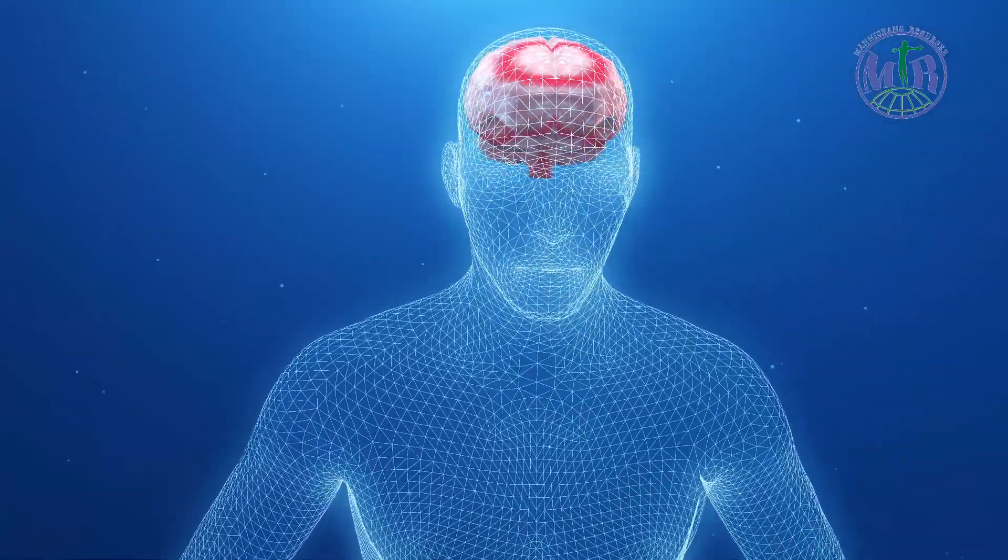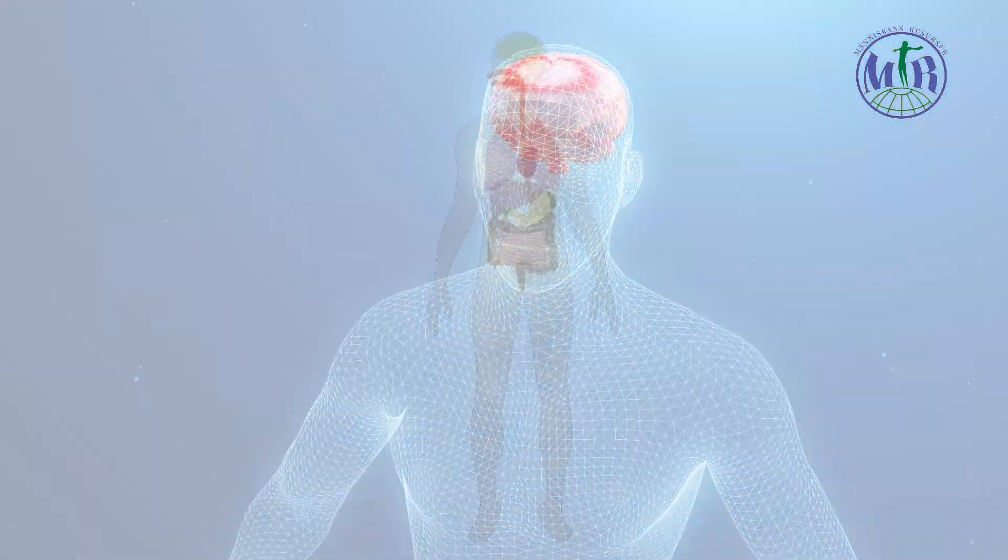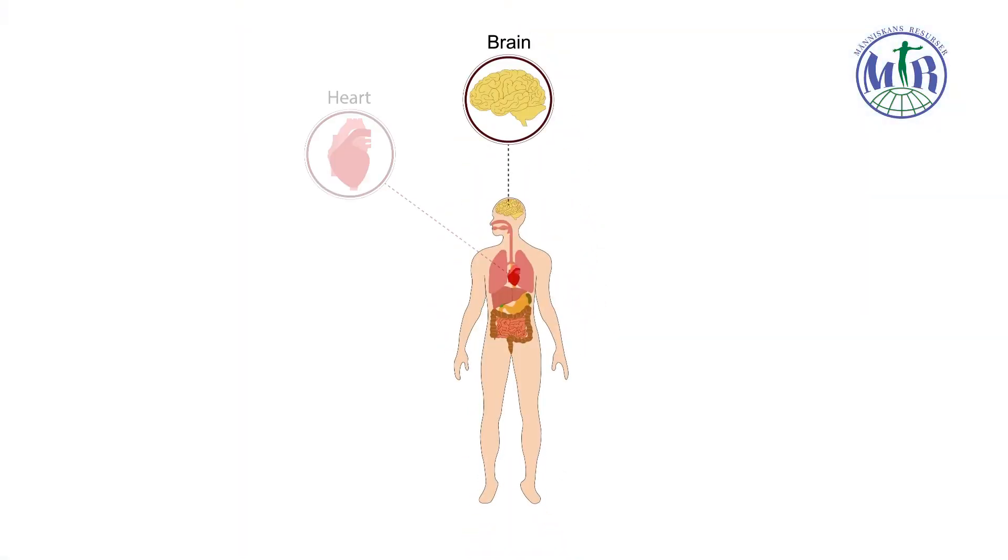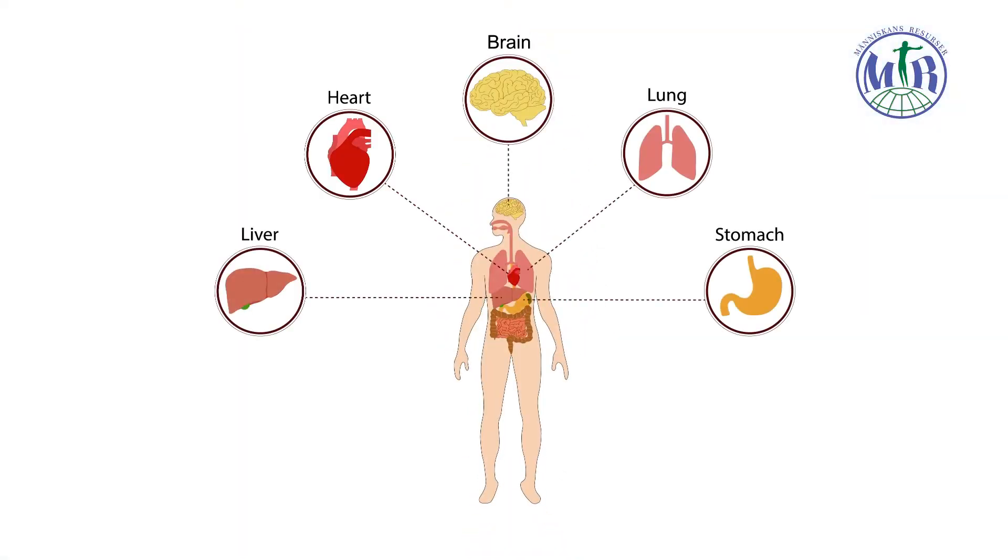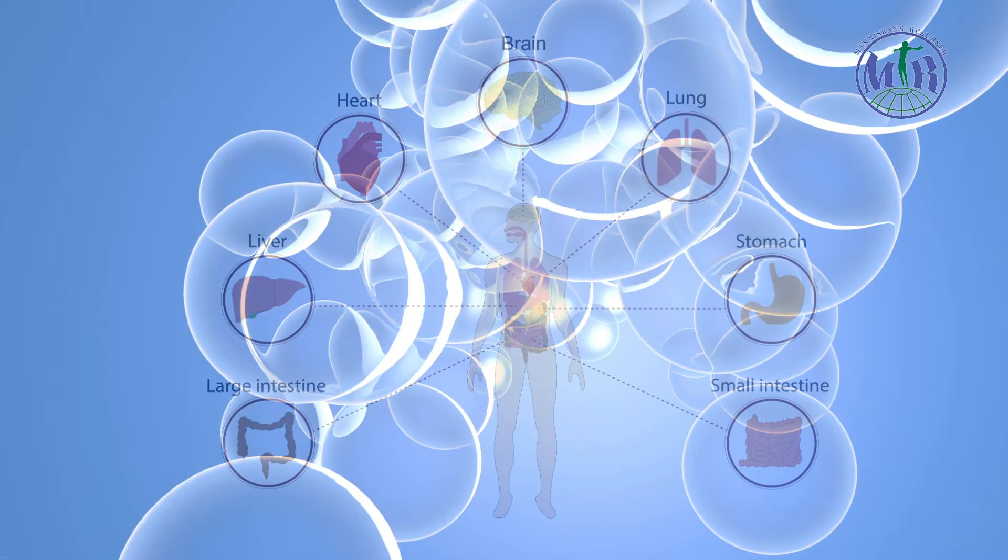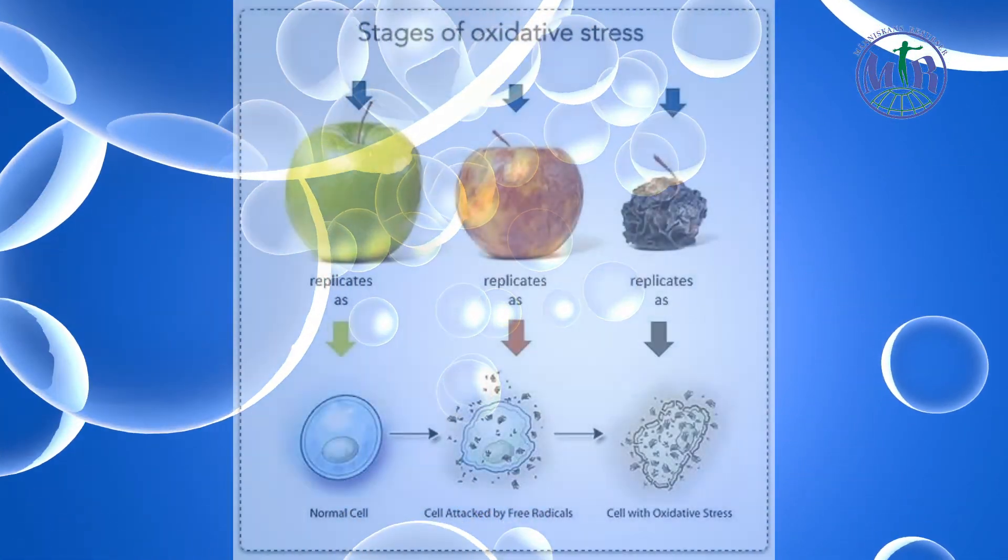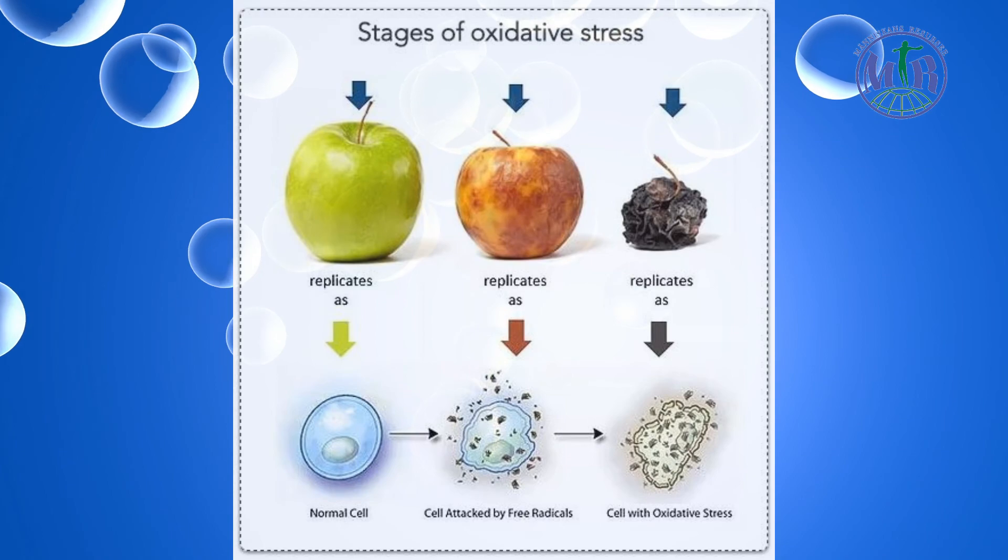Our body is controlled by the brain, and the brain's functions primarily determine the proper functioning of the body and our health in general. The main causes of dysfunctions of the brain are weak blood supply and oxidative stress.